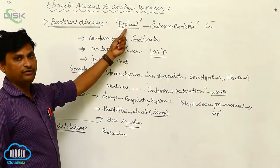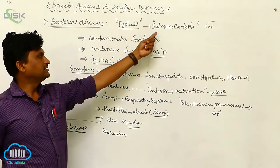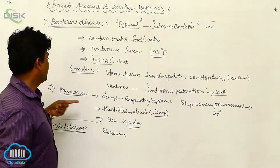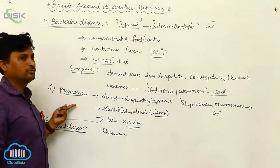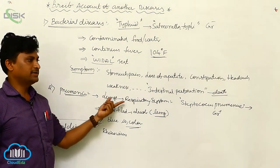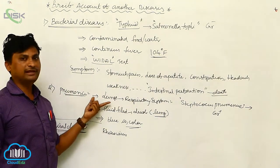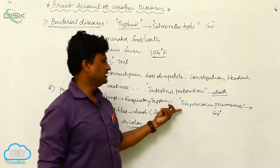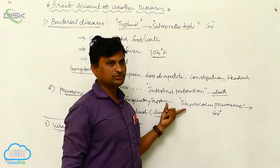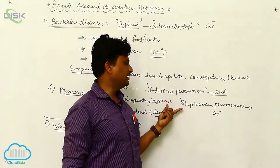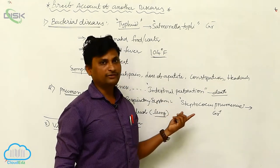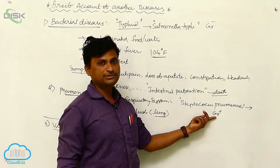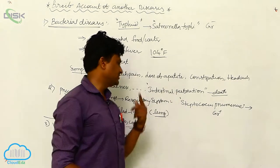Bacterial diseases: typhoid fever is caused by Salmonella typhi, which is a gram-negative bacterium. The second one is pneumonia, which affects the respiratory system, mostly infecting the lungs. The bacteria responsible are Streptococcus pneumoniae and Haemophilus influenzae — two bacteria that are gram-positive and are associated with pneumonia.